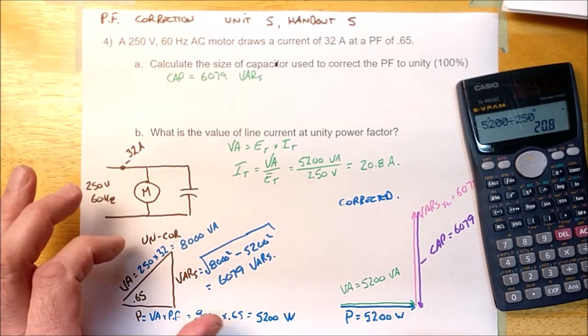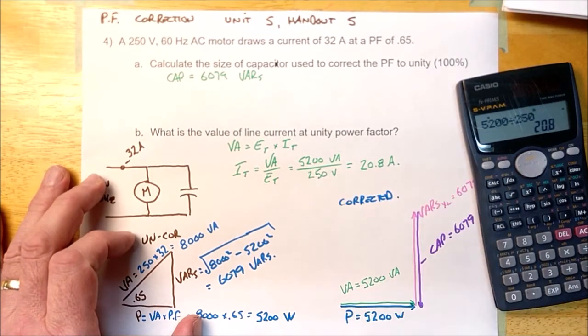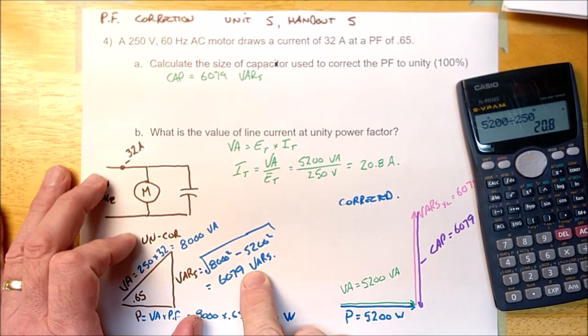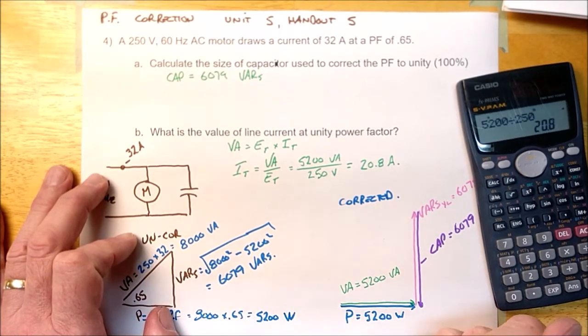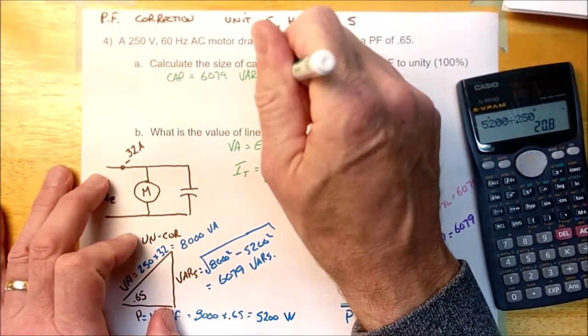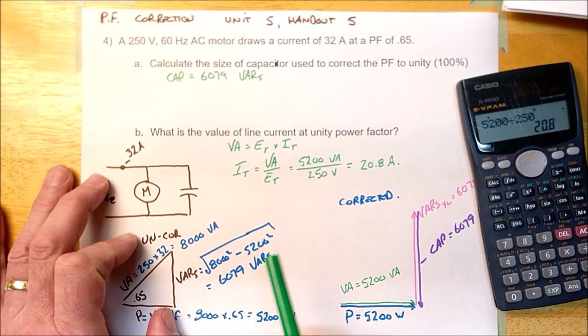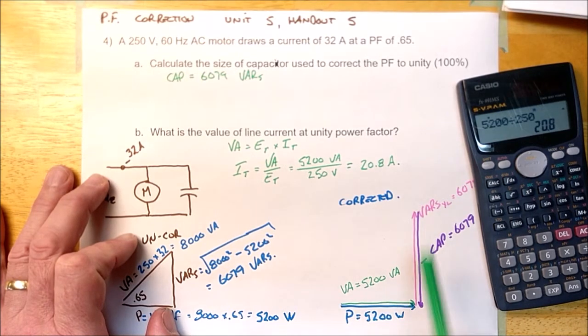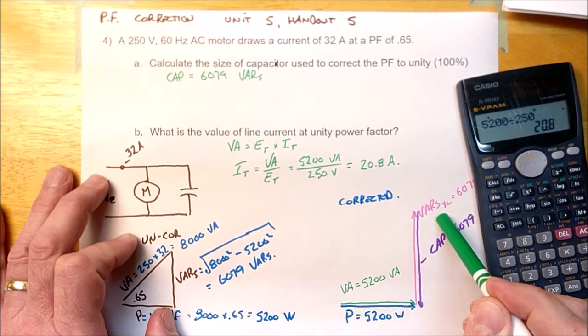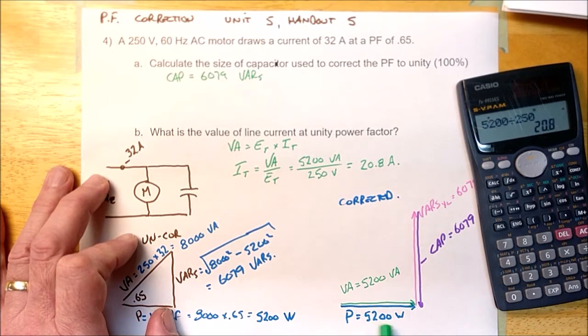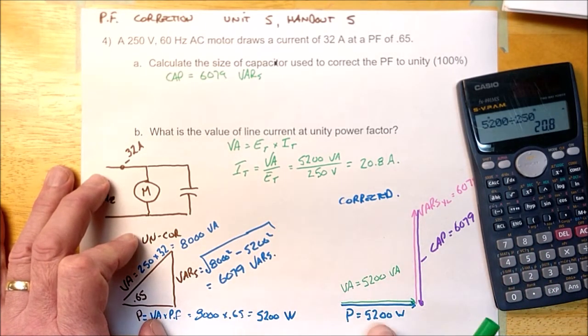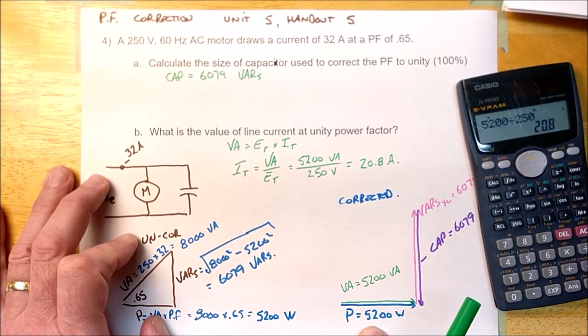Now once you've drawn the uncorrected power phasor diagram, there are going to be two things that happen. If you're correcting to unity, the size of the capacitor will be equal to this. You're trying to take care of all this reactive power with a capacitor. So the answer for the cap here is going to be this. Now the second thing that's going to happen is your power and your VA will be the same after correction, because you've added a third phasor that's taking care of all the reactive power due to the inductor. And your VA is now a line that's on top of your true power.